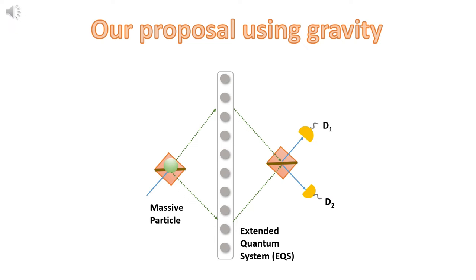We prepare a massive particle in a quantum superposition and calculate the probabilities through beeping of the detectors after it interacts gravitationally with an extended quantum system. We use these probabilities to know how many of these stringy things the particle interacted with in the first place. These stringy things are progenitors of elementary particles.